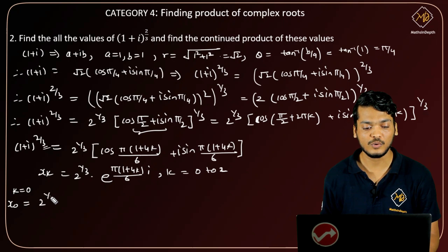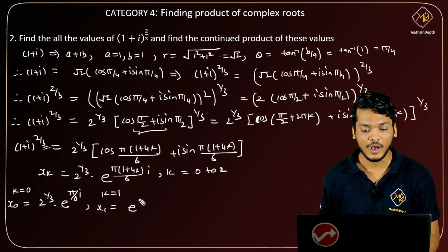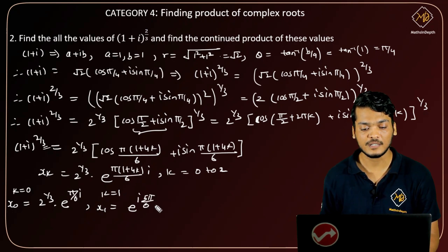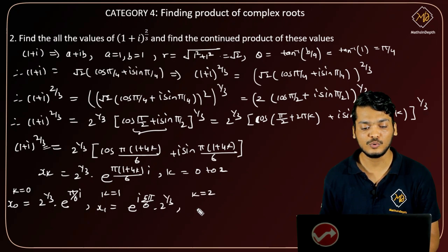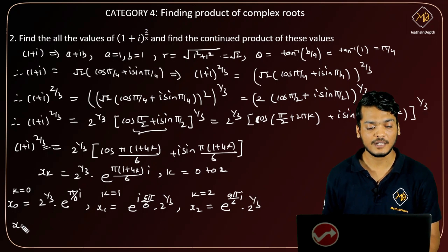Let x_k denote the expression as a function of k. For k=0: x₀ = 2^(1/3) · e^(iπ/6). For k=1: x₁ = 2^(1/3) · e^(i·5π/6). For k=2: x₂ = 2^(1/3) · e^(i·9π/6).